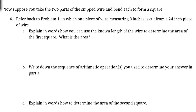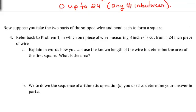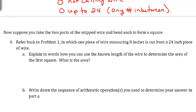Now suppose we take these two parts of the snipped wire and bend each to form a square. Referring back to problem one in which one piece measuring 8 inches was cut from the 24-inch piece, we're taking this 24-inch piece and cutting it so one piece is 8 inches and the other is 16 inches.